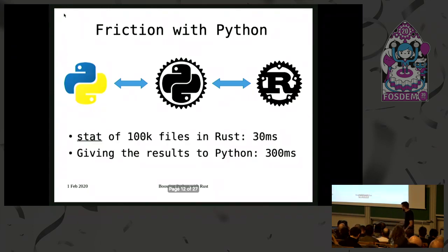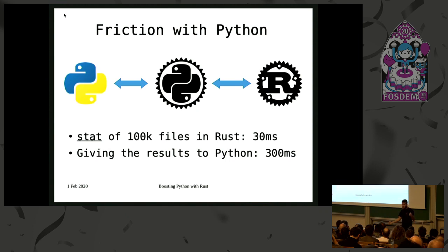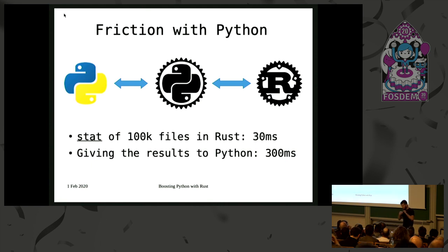For example, if I am stating 100,000 files on my laptop with hot kernel caches in parallel in Rust, it takes about 30 milliseconds, which is pretty cool. But if I give the results back to Python, it takes about 300 milliseconds for anything useful. You add up one order of magnitude more on top of what you're actually trying to do, negating the entire point of doing it in Rust.